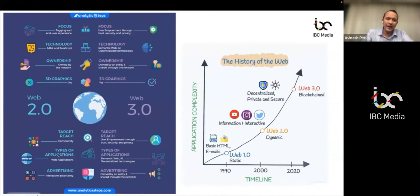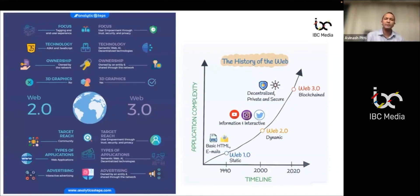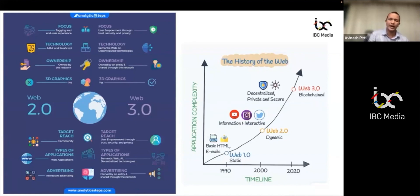Looking at target reach and types of applications: Web 2 applications include Facebook, Instagram, and all kinds of current client-server based applications. Moving to Web 3, we say that the ownership of the data is owned by the person.